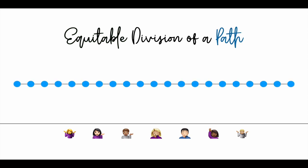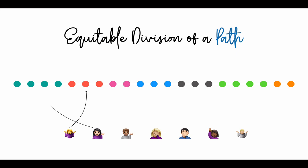The goods happen to also lie on a path and we're specifically looking for a connected allocation, which is to say that every agent receives a contiguous interval from this path.